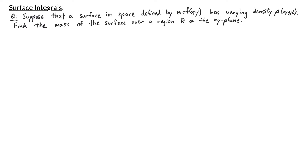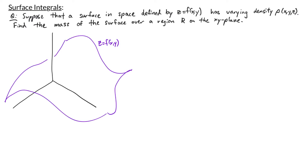Let's start by drawing a picture of this. Here we have three-dimensional space with our surface z equals f of xy. What we're interested in is the mass of a portion of this surface over a region R on the xy-plane. Let's say that I have the following region R — the portion of the surface that's on top of region R might look something like this.